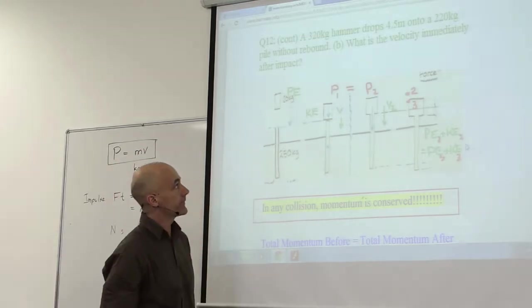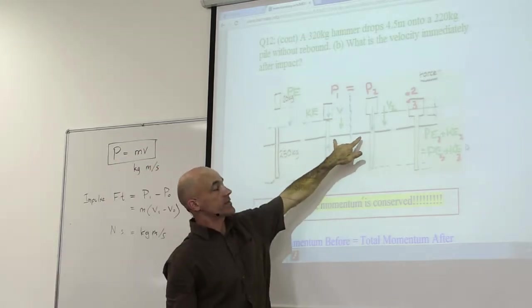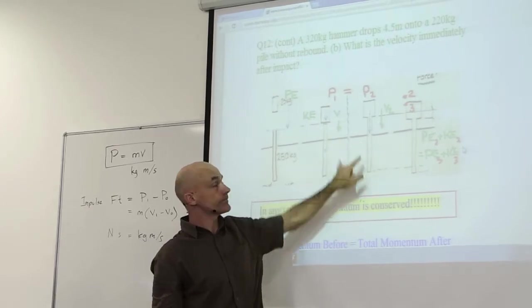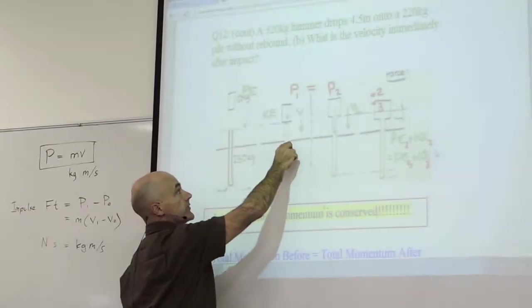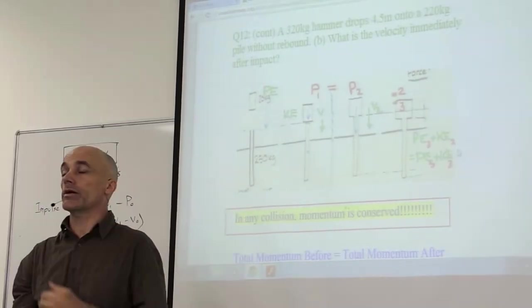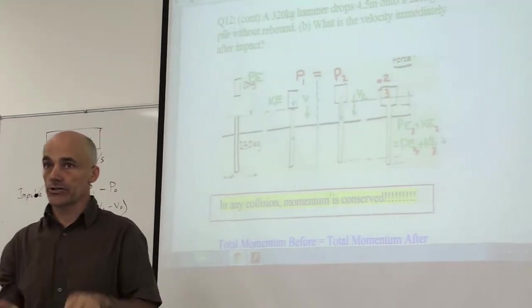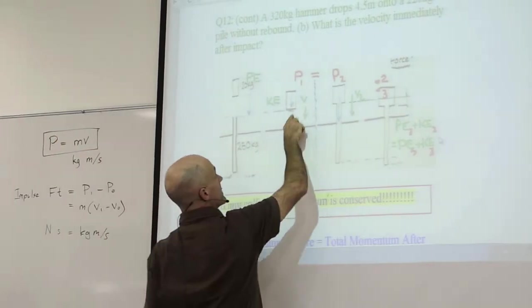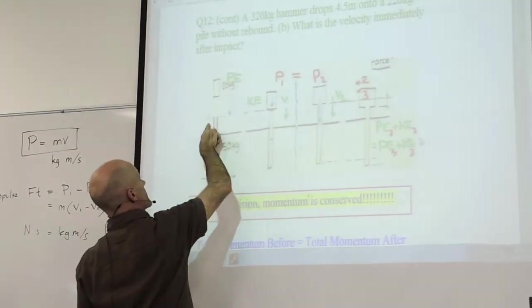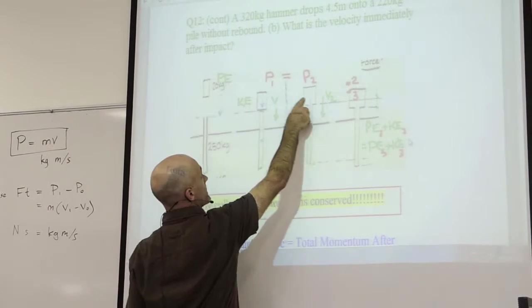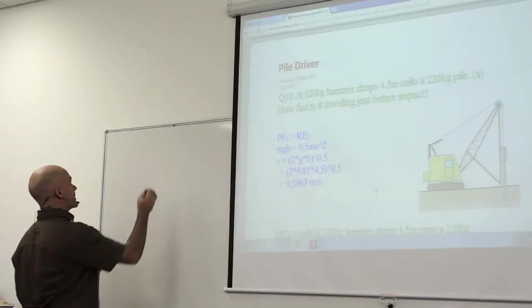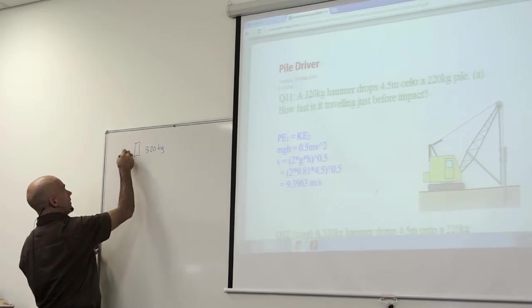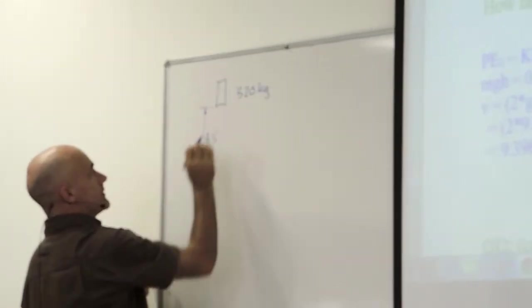If anything sticks, it's not elastic. I've got a coefficient of restitution of zero here. If it's not elastic, the only thing that's conserved is momentum. We've probably wasted energy and we don't know how much. So the only way across is momentum. Conservation of energy, then conservation of momentum, then back to conservation of energy. A 320 kilogram hammer and the height is 4.5 meters.